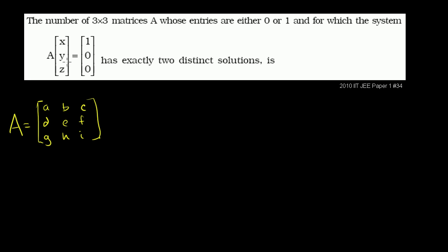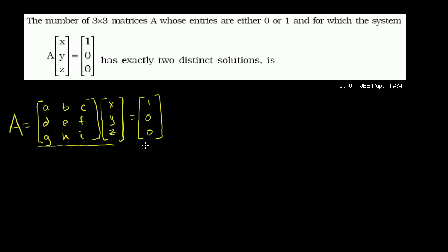And if that's the case, then this equation would be matrix A times vector x, y, z equal to [1, 0, 0]. If we were to multiply out this expression, we would get: a times x plus b times y plus c times z is equal to 1. And we could do that for each of the rows.